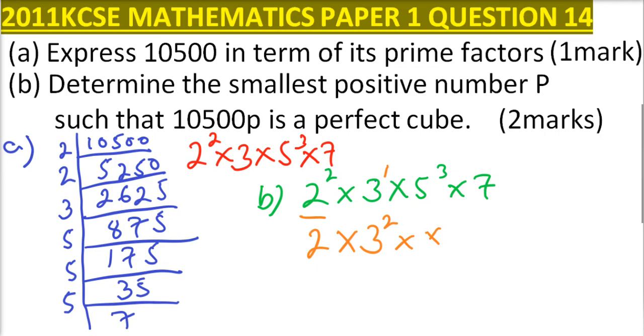For 7, we have only 7 to power 1, so we multiply by 7 squared to make it 7 cubed. So that will make that number a perfect cube.